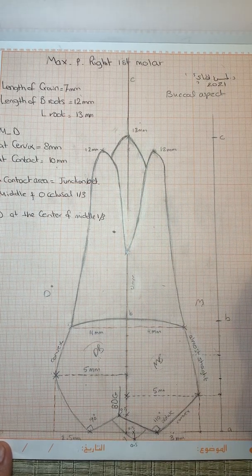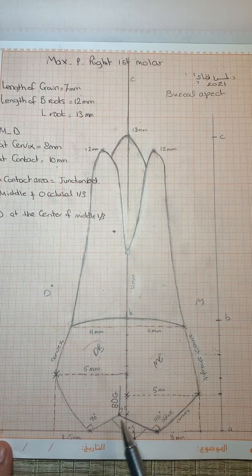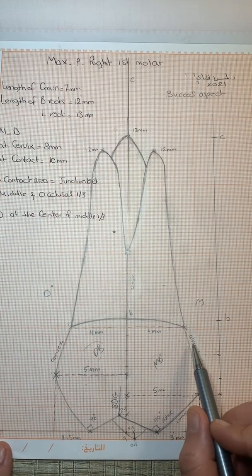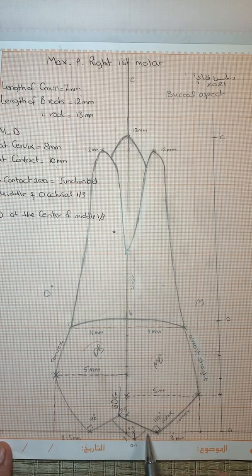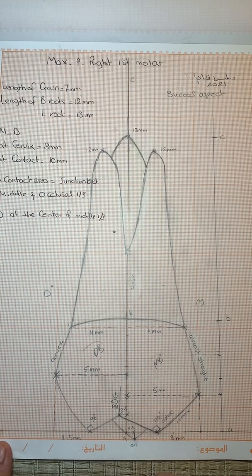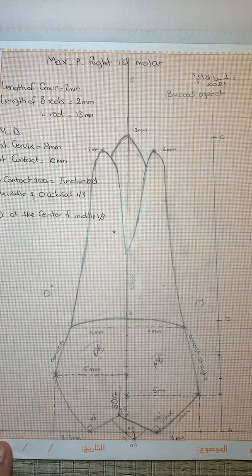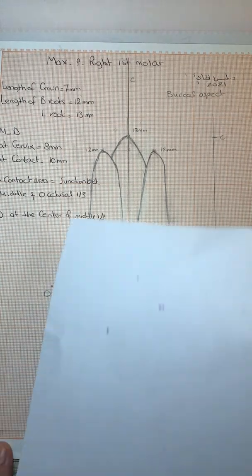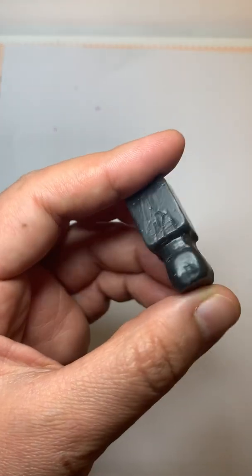An important point to focus on: when you try to do carving, never touch this area — because if you carve here, you will lose the occlusal aspect. You can never properly carve the occlusion after that. All that is required from you is to cut and create the mesial outline and distal outline as shown in this figure.